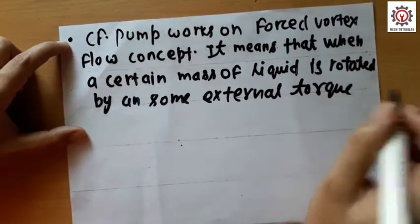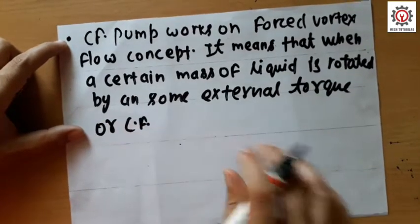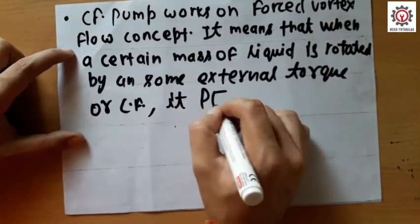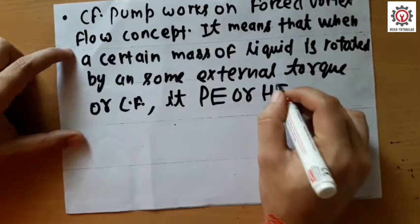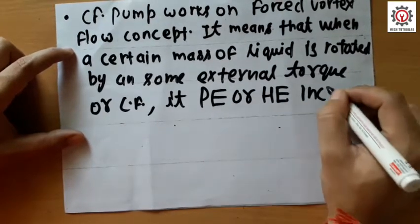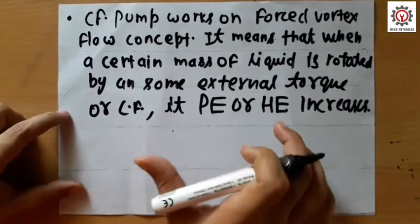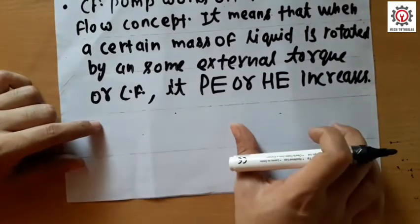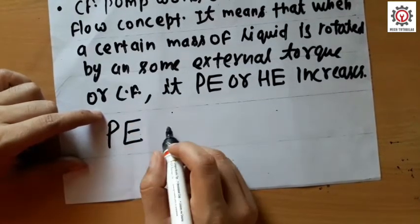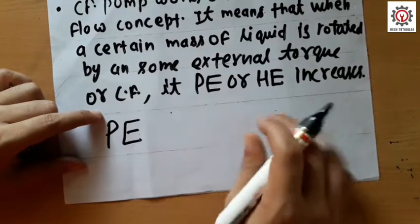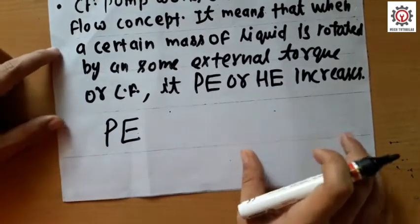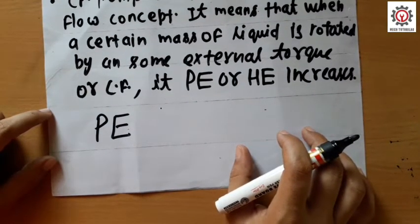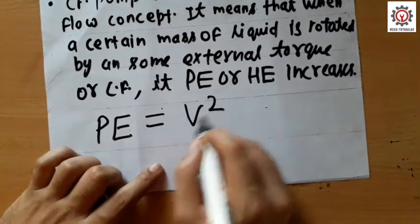Forced vortex flow means that when a certain mass of liquid is rotated by an external torque or centrifugal force, its pressure energy or hydraulic energy increases. This is the core concept of the centrifugal pump. The increase in pressure energy or hydraulic energy is proportional to the square of the tangential velocity, given by V²/2g.